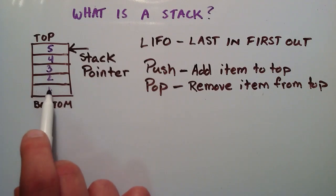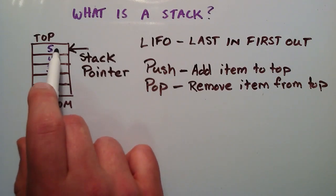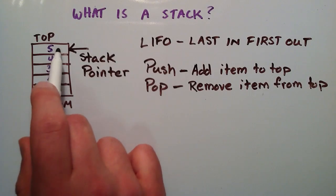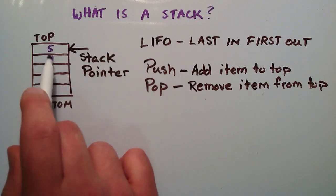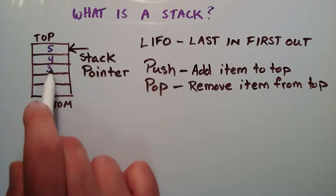Basically what we have here is we have five different items. And you can think of these as five different nodes. And each node contains some data in it. And they're just kind of stacked on top of one another.